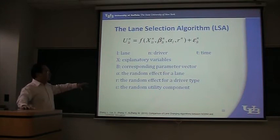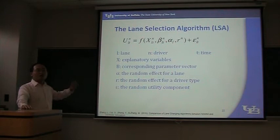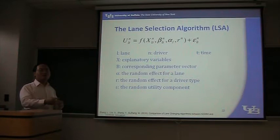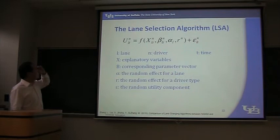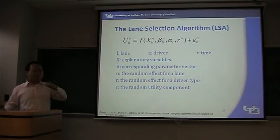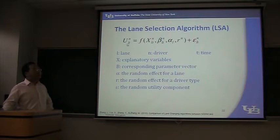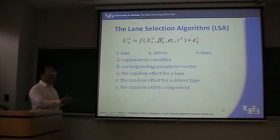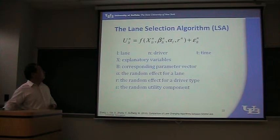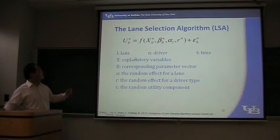If you carefully observe, you will find that all the previous algorithms are deterministic. You can calculate them and the result will be deterministic — there is no stochastic element inside. But in this MIT model, they use the discrete choice model to perform lane selection and gap acceptance modeling. This is the general form of the utility: a value that is associated with each lane, where larger is better. The utility will be a function of a lot of things.